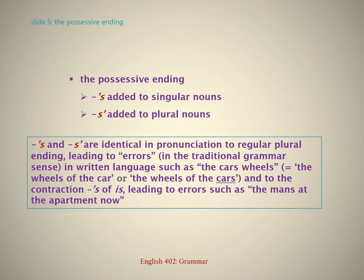The possessive ending: apostrophe S is added to singular nouns; S apostrophe is added to plural nouns. Apostrophe S and S apostrophe are identical in pronunciation to the regular plural ending, leading to errors in the traditional grammar sense in written language — such as 'the car's wheels' equals 'the wheels of the car,' or 'the wheels of the cars' — and to the contraction apostrophe S of 'is,' leading to errors such as 'the man's at the apartment now.'